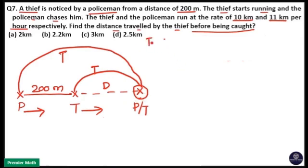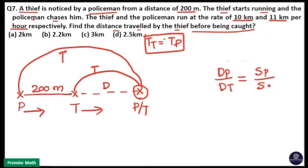So, here time taken by thief is same as time taken by police. That is why time is constant here. So, whenever time is constant, distance taken by police divided by distance taken by thief is same as speed of police divided by speed of thief.